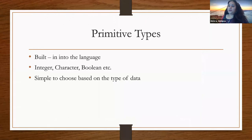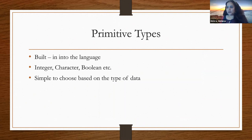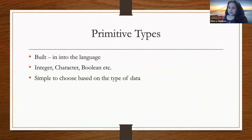The primitive types are specifically the data types built into the language — integer, characters, Boolean, and other data types — which are simple to choose, and the programming language defines how to use them based on the data.